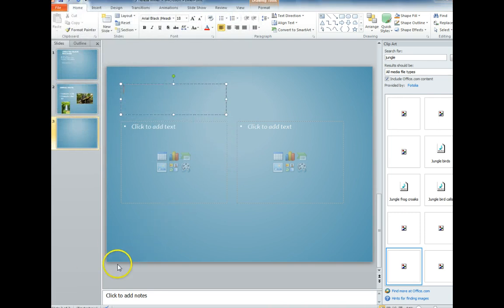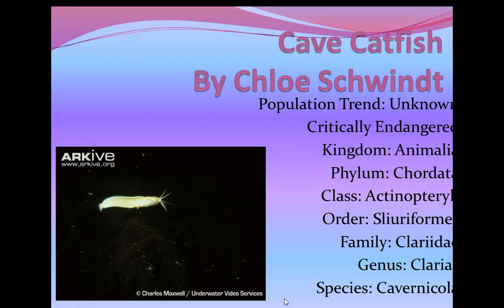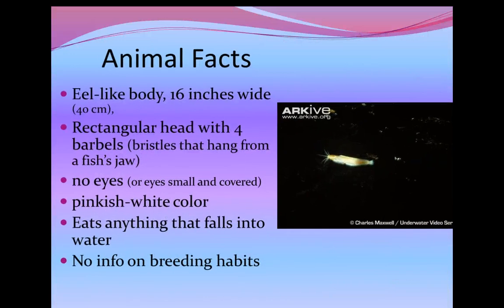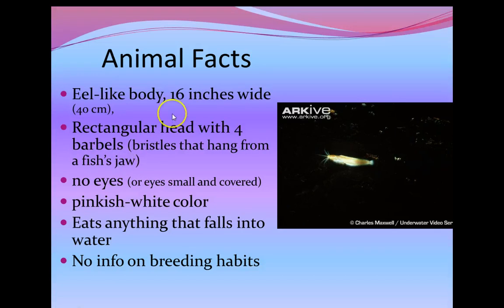Now I'm going to show you a student PowerPoint that was done very well for this project. Chloe has nice colors, nice word size so people can read it, and she chose good pictures from archive. She had a strange word — her fish has barbells — so she went to the dictionary and found out what it means. She also went to Google and converted 40 centimeters to 16 inches so we know what that means.